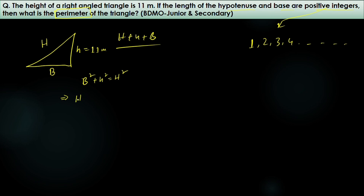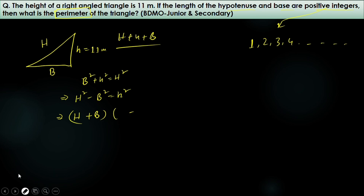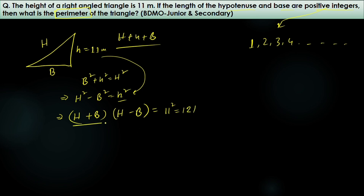Rearranging, H² − b² equals h², which factors as (H + b)(H − b) = h². Substituting h = 11, we get (H + b)(H − b) = 11² = 121.